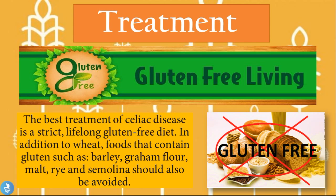The best treatment for celiac disease is a strict lifelong gluten-free diet. In addition to wheat, foods that contain gluten such as barley, gram flour, malt, rye, and semolina should also be avoided. If these patients follow a gluten-free diet, their prognosis is very good and all these symptoms disappear quite nicely.